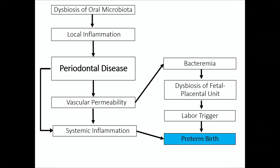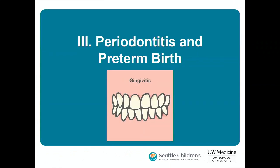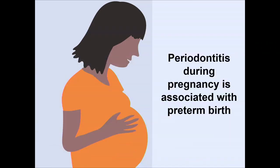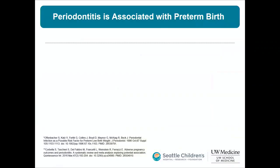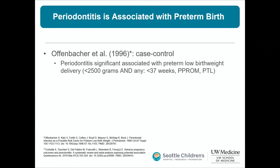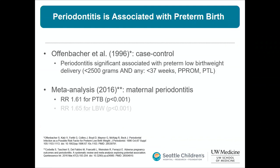What does the evidence actually show? Periodontitis during pregnancy is associated with preterm birth. Steve Offenbacher through UNC was one of the first to demonstrate this, with a publication in 1996. Subsequent systematic reviews and meta-analyses have shown a nearly two- to threefold increased risk of preterm birth in pregnant people with periodontal disease.